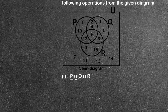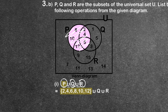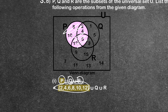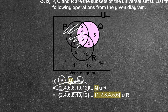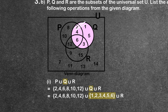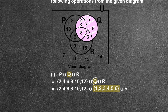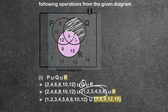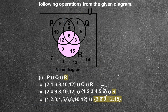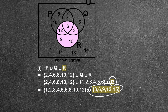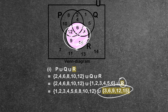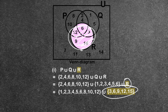Number 1: P union Q union R. This is P, this is Q, and this is R. We identify the elements belonging to P, Q, and R respectively.